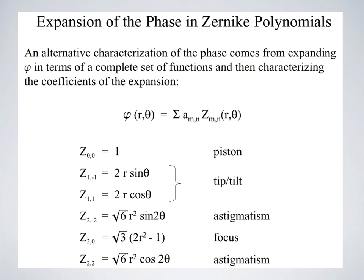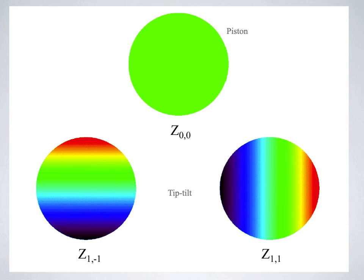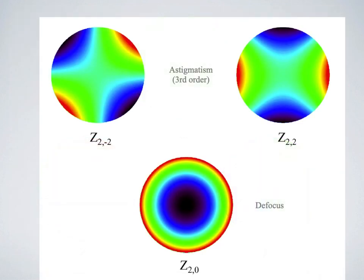The point spread function varies as a function of pupil size — the larger the pupil, the bigger the role aberrations play. We refer to different orders of Zernike polynomials. Third-order Zernike polynomials are where we start getting clinically interested — basically astigmatism and defocus, meaning myopia or hyperopia.